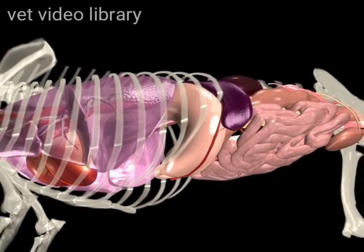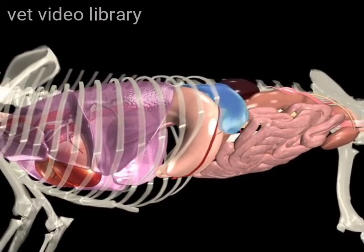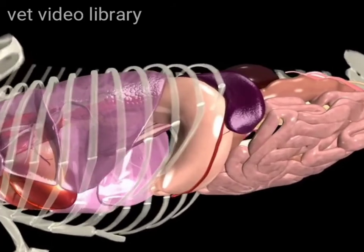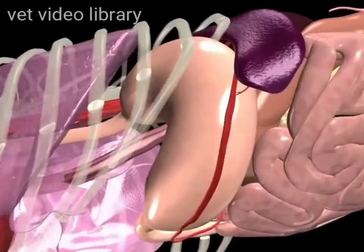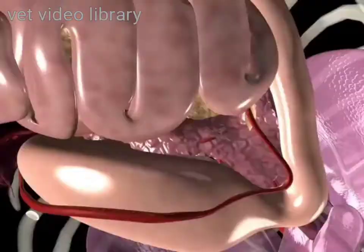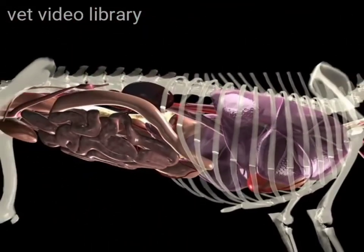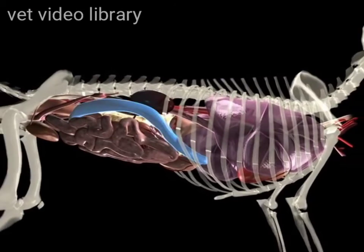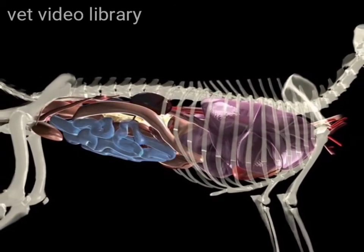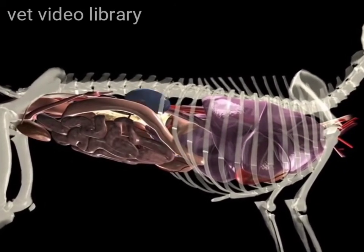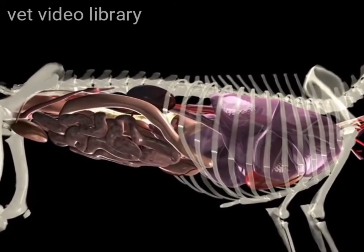The stomach, spleen, and left kidney are easy to identify from the left side of the abdomen. From the dog's right side, the duodenum, jejunum, pancreas, and the right kidney are evident.